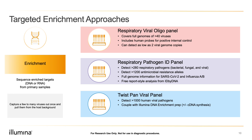Finally, TWIST has sold a large — more than 1,000 viral pathogen — panel for many years. It covers a wide array of viruses from many different sources. You can couple their probe pool with the Illumina DNA Enrichment Prep to get the highest performance. All of these panels have full target lists online — just Google their names and you can learn more.